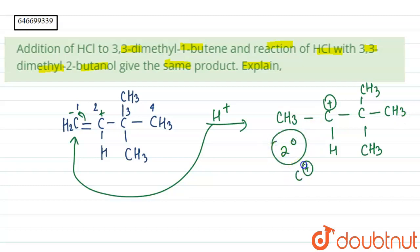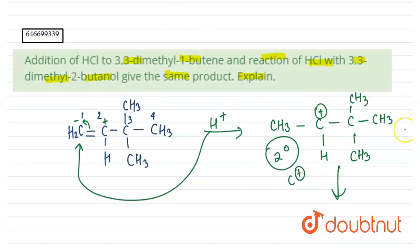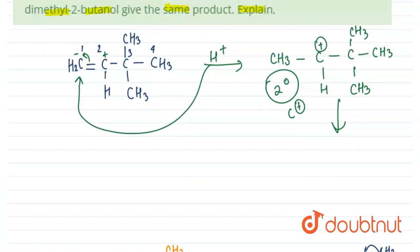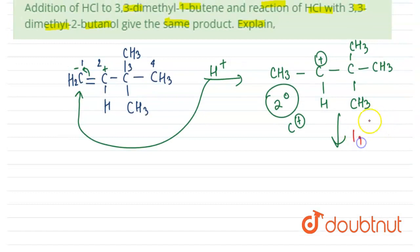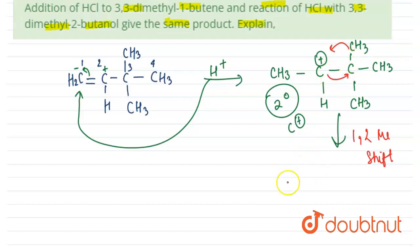This is a secondary carbocation, and thus rearrangement will take place by a 1,2-methyl shift. What will happen is that this CH3 will move here and the positive charge will move, such that we will get a tertiary (three degree) carbocation.